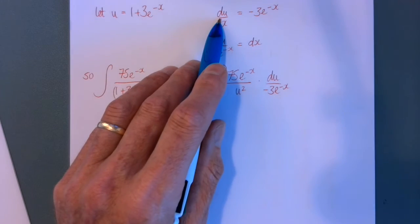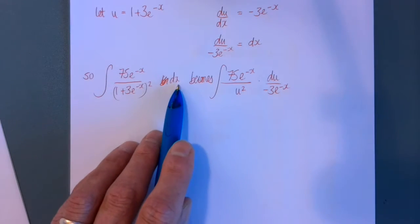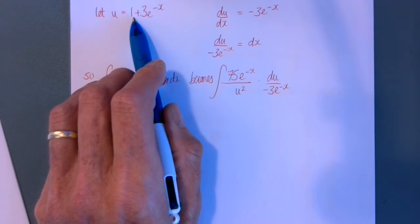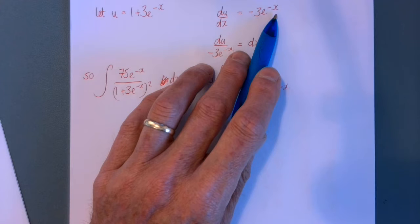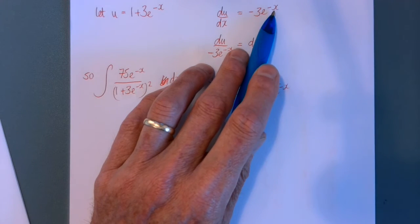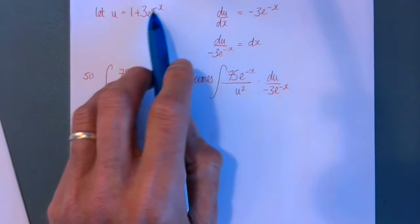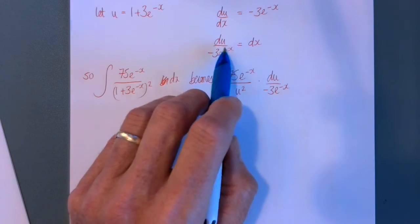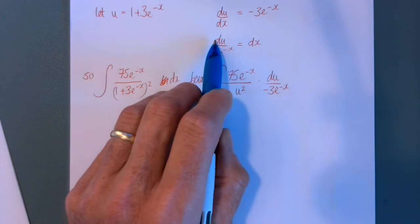So the first thing I'm going to do is differentiate it because I know I need to replace dx with something to do with du. So if I differentiate this, 1 disappears, e to the minus x becomes e to the minus x multiplied by what you get when you differentiate that which is minus 1. The 3 just passes through unchanged so you end up with that, and then I rearrange it to get a dx equals expression.